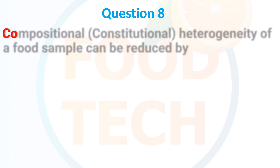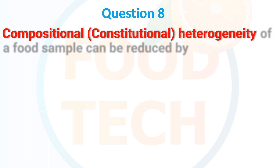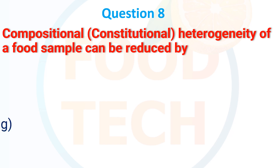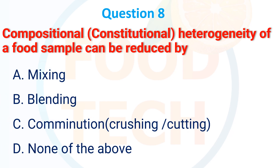The compositional and constitutional heterogeneity of food samples can be reduced by: A. Mixing, B. Blending, C. Combination of crushing and cutting, D. None of the above. The correct answer is C: combination of crushing and cutting.